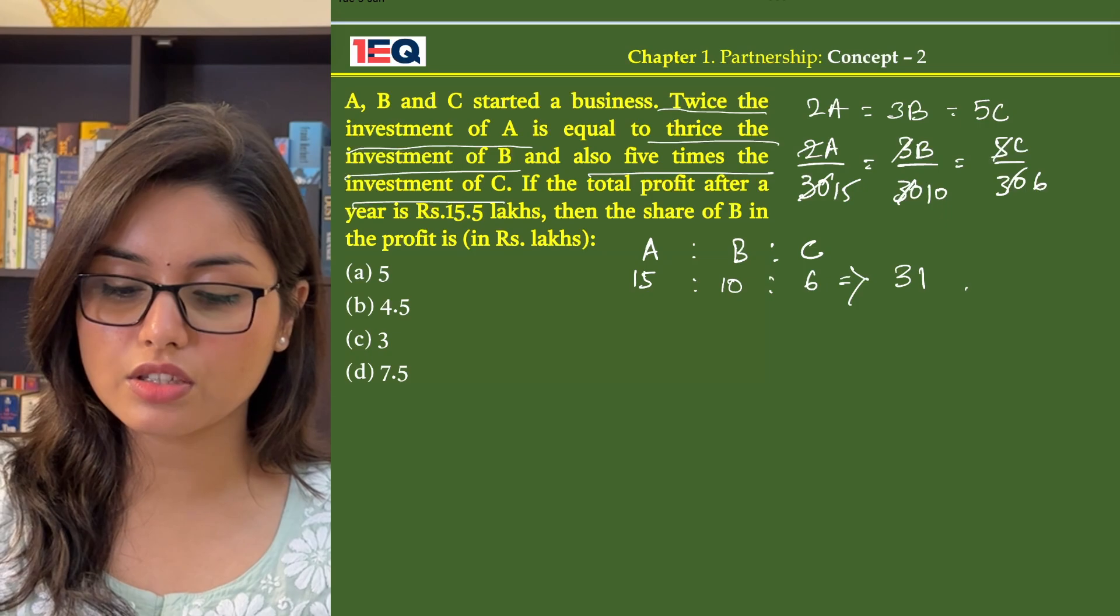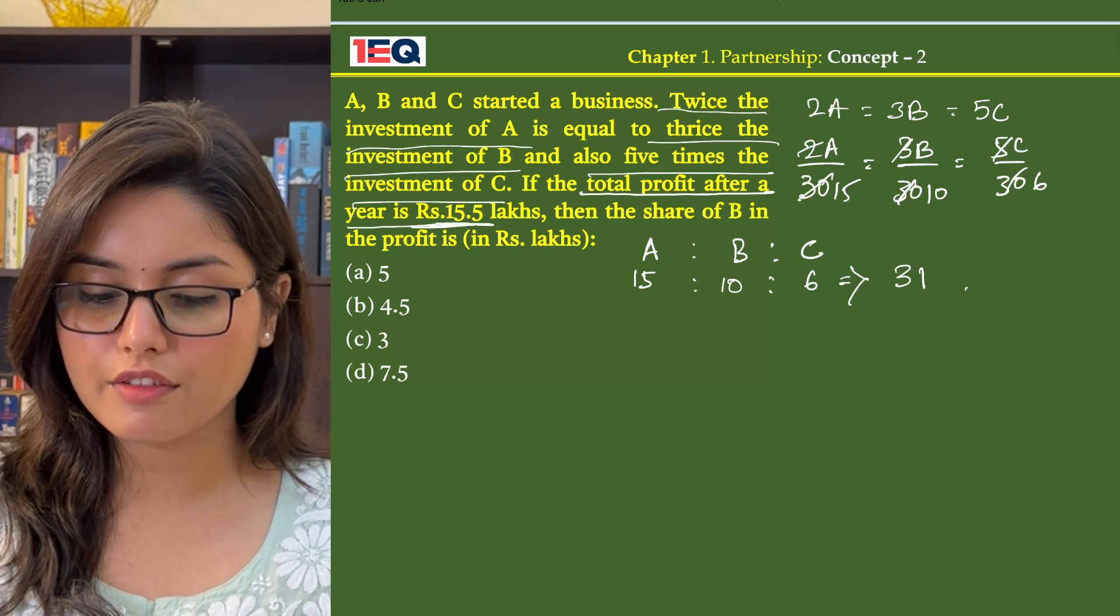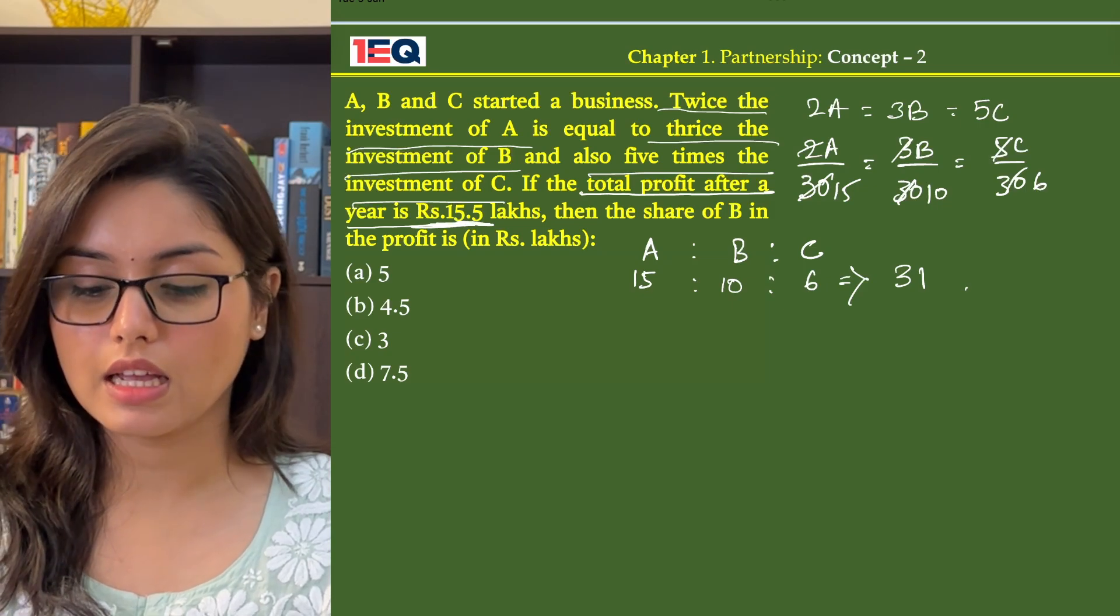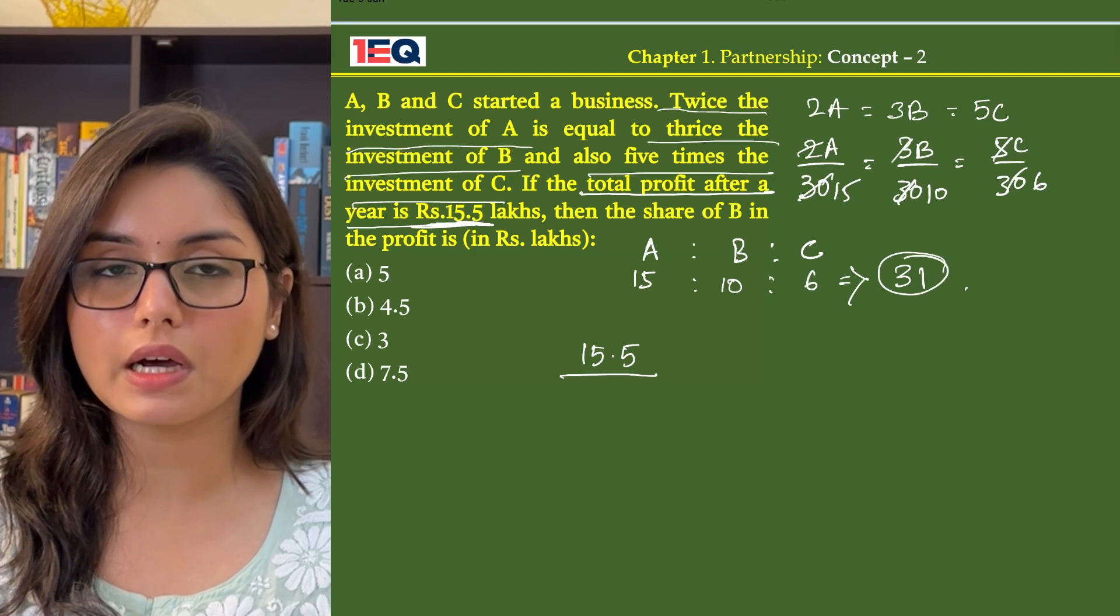Now given in the question, the total profit after a year is Rs 15.5 lakhs. That means 15.5 lakhs is the value of 31.